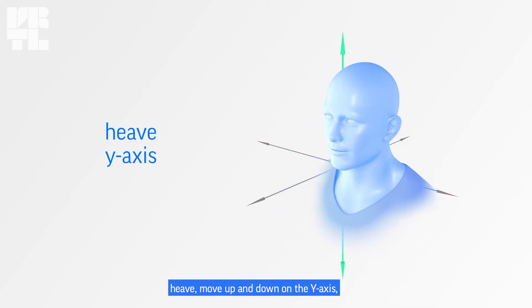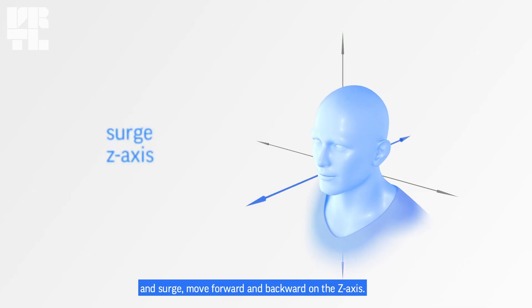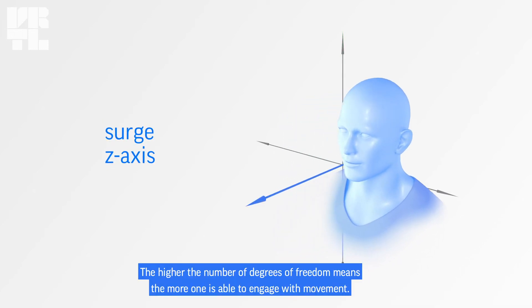And surge, moving forward and backward on the z-axis. The higher the number of degrees of freedom means the more one is able to engage with movement.